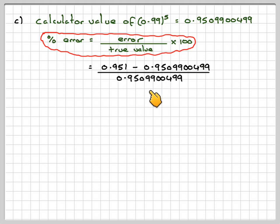So the actual value is that on the calculator times 100. And then that comes to 0.0010462, which is 0.00105% to three significant figures.